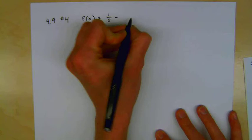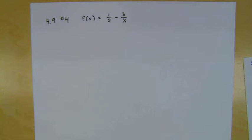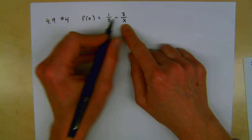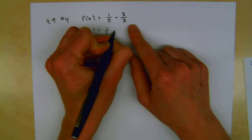Okay, so we're going to start with 4.9 number 4. For this function, we're given f(x) is equal to 1/5 minus 3 divided by x.